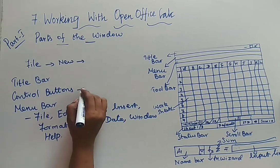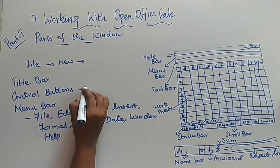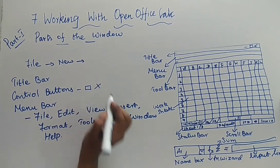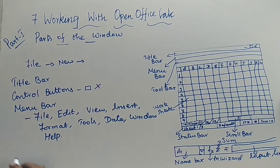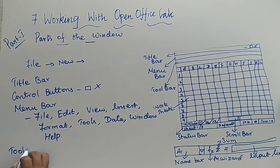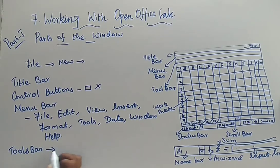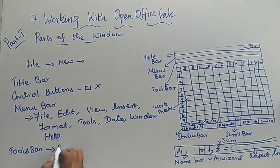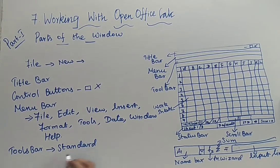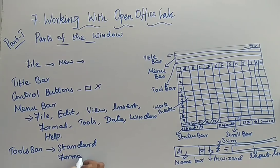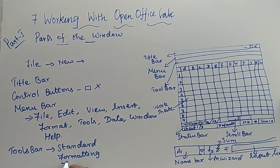In the control buttons we discussed Minimize, Maximize, and Close. And next you are going to have the toolbar — it is of three types. What are the three types? The first one is your Standard Toolbar. And the next one is your Formatting Toolbar. And the next one is your Formula Bar.